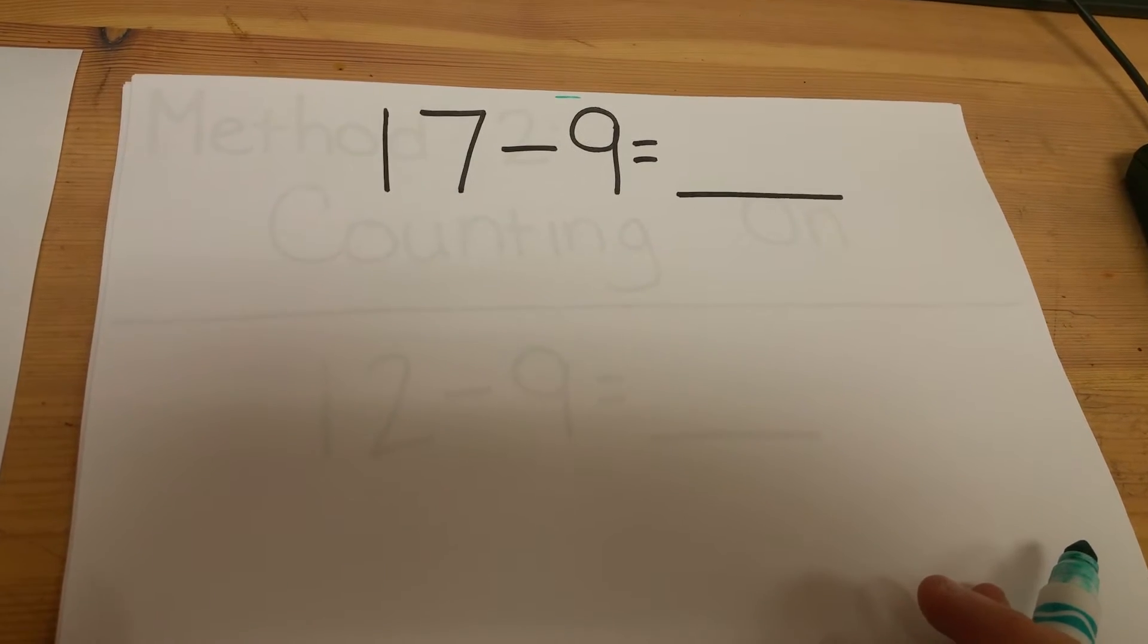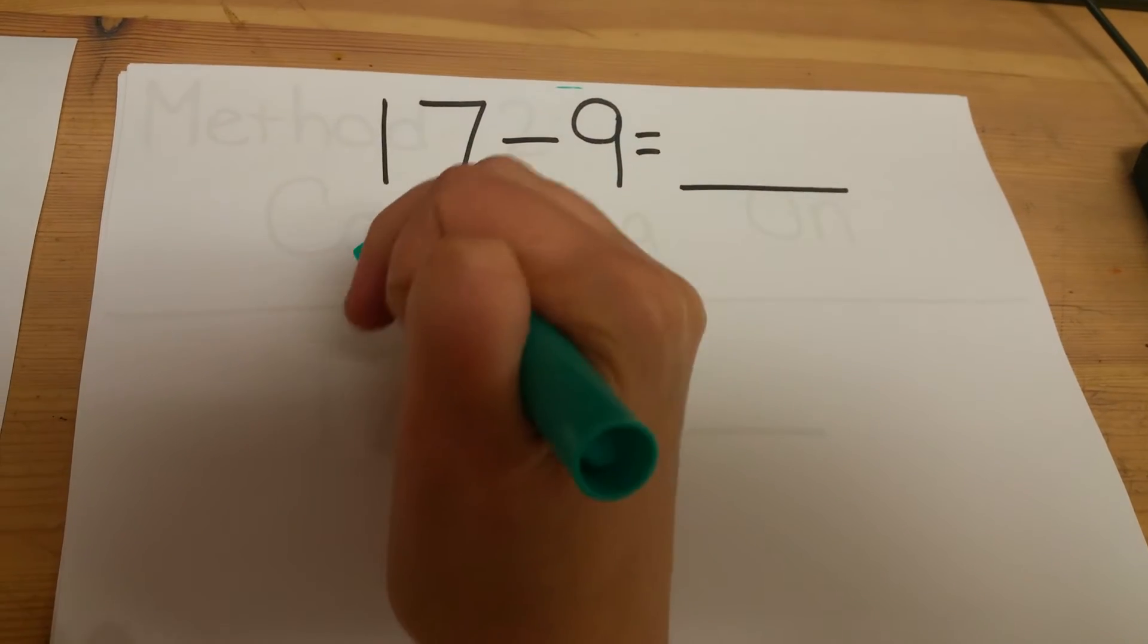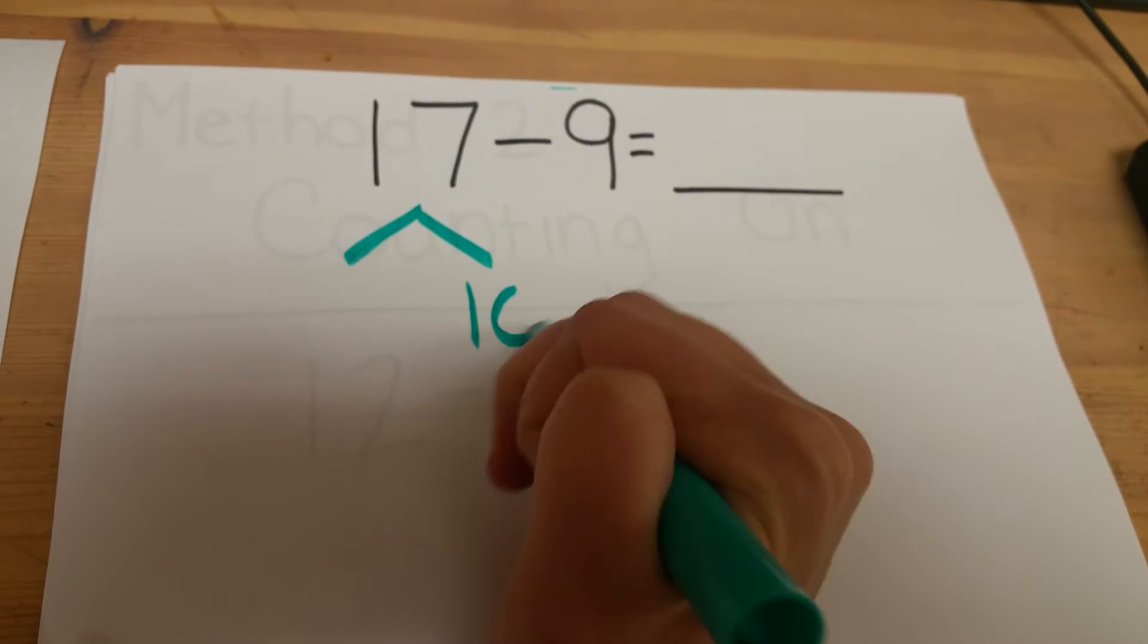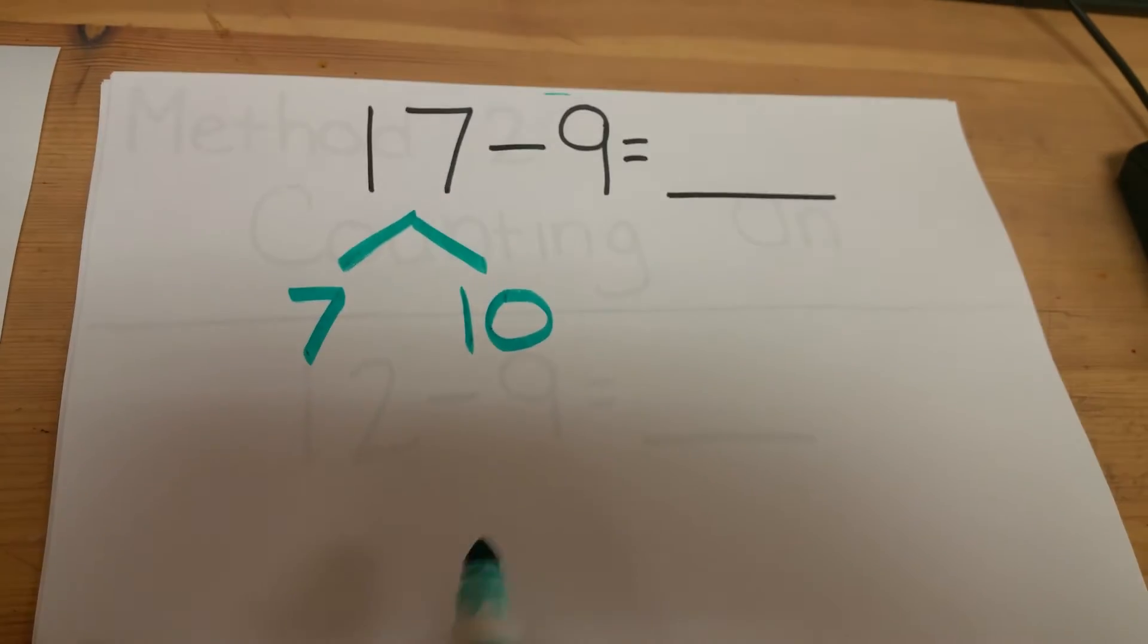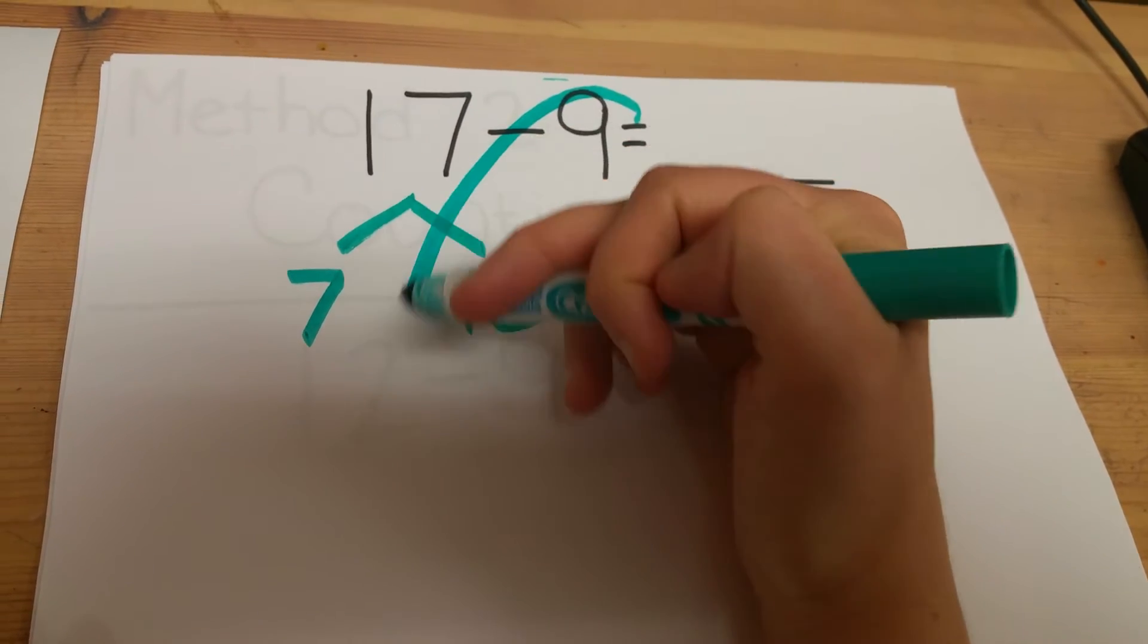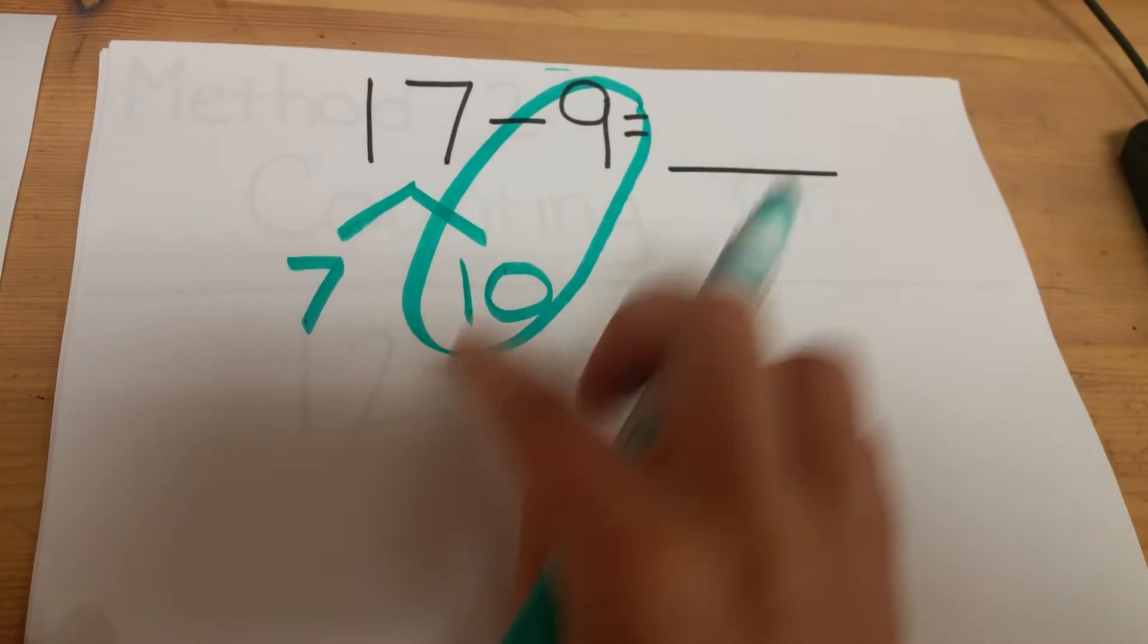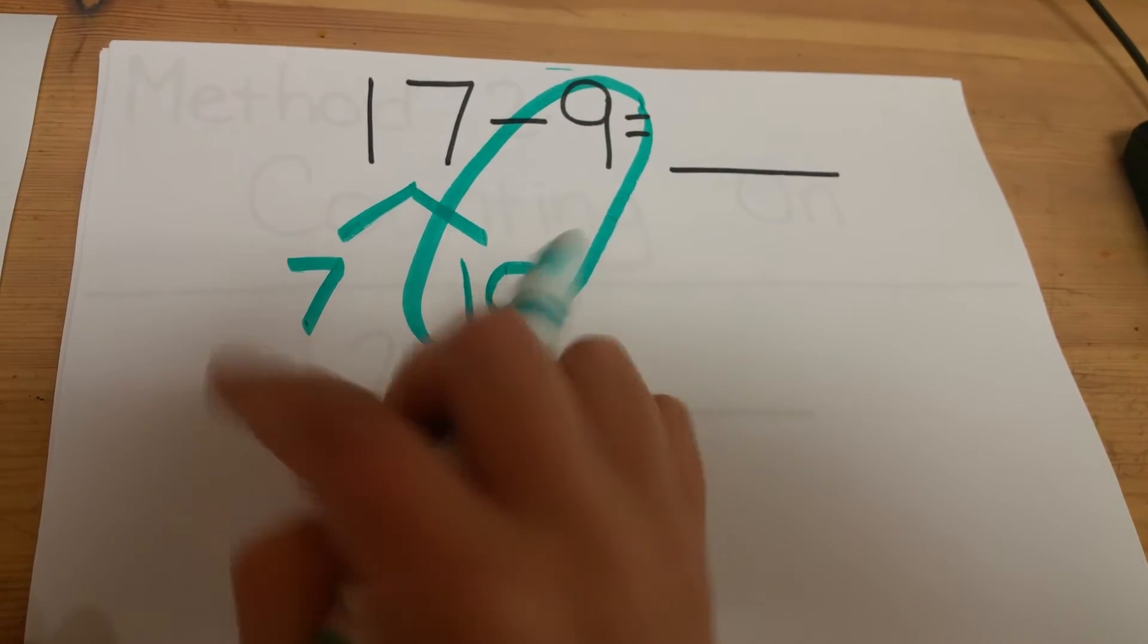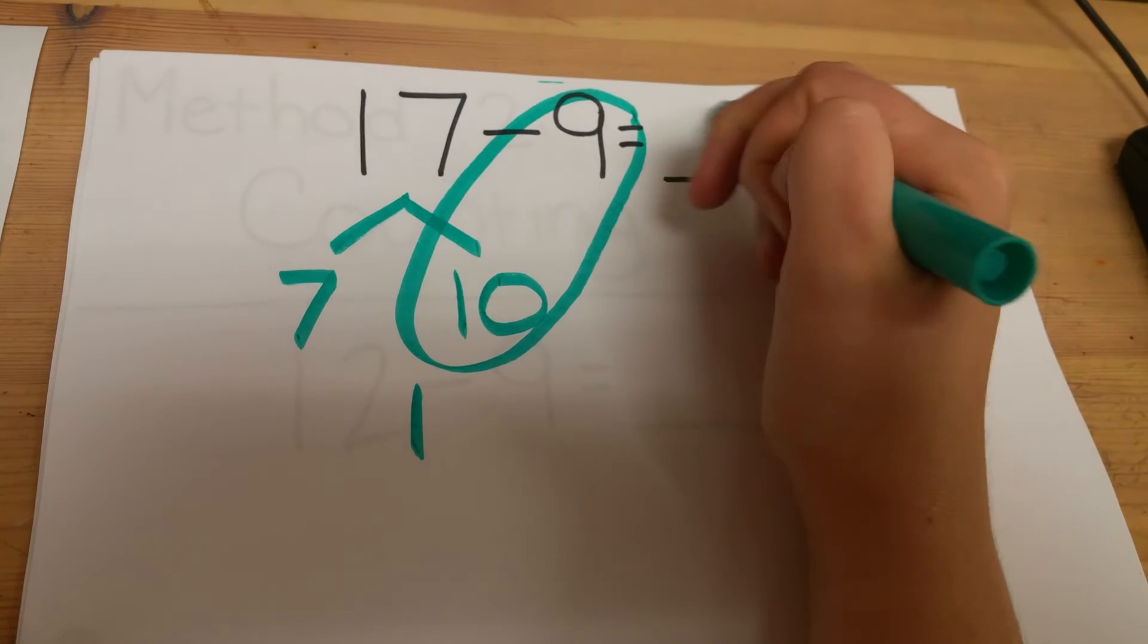17 minus 9, the take from 10 method. I would split the 17 up into the 10 and the 1's. Think 10 minus 9 taking from that 10. 10 minus 9 is 1. 7 plus 1 is 8.